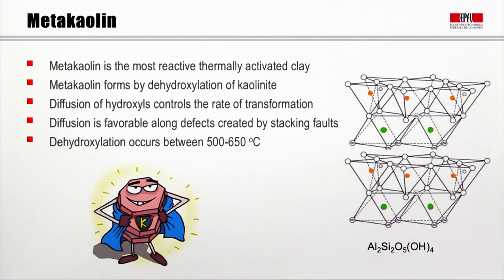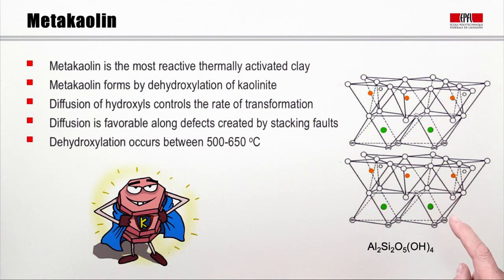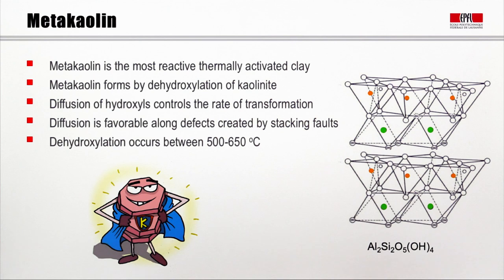As we saw in the last lecture, the reactivity of kaolinite comes from its crystal structure. We have layers composed of one part silicate tetrahedra and one part aluminate octahedra, with oxygens coordinated with hydroxyls. It is the loss of these hydroxyls from the structure that gives you the amorphous reactive structure which can then act as the pozzolan. This dehydroxylation occurs between 500 and 650°C.